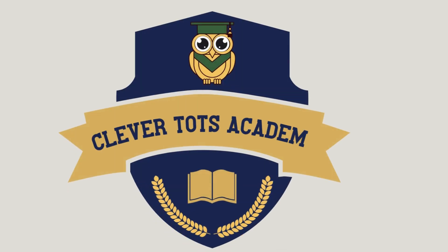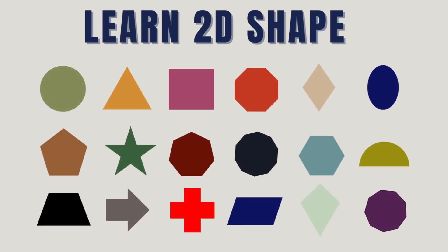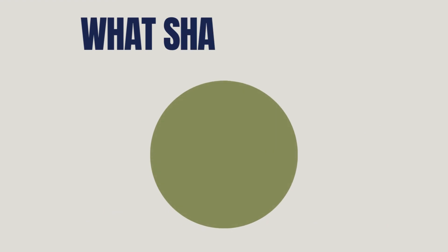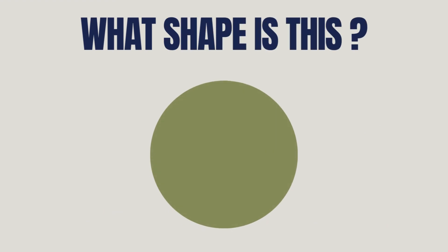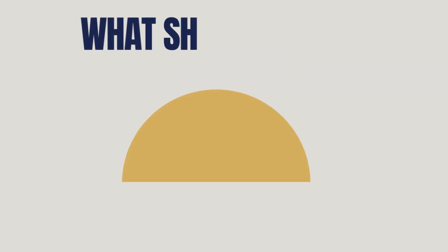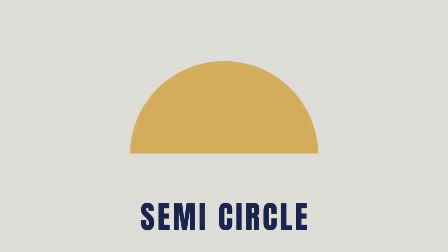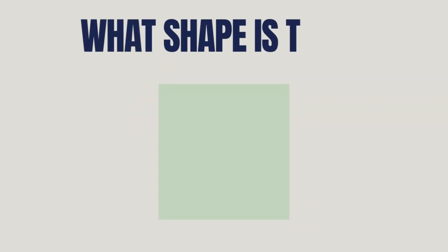Clever Tots Academy. Let's learn two D shapes. What shape is this? It's a circle. What shape is this? It's a semicircle. What shape is this? It's a square.